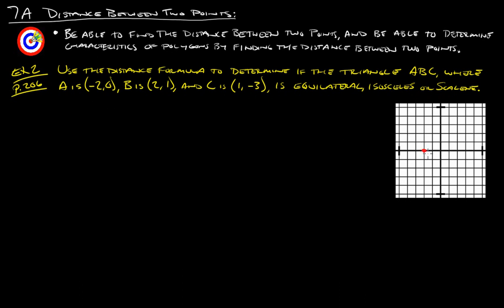So we've got A at negative 2, 0 — that's point A. Point B is at 2, 1 — that is B. And then point C is at 1, negative 3 — that's point C. Now we've got to try to figure out what kind of triangle that is. Equilateral, isosceles, and scalene are all classified by side length, so we've got to figure out what each one of these side lengths are.